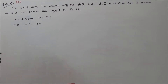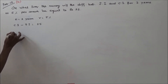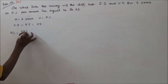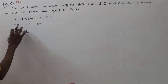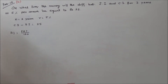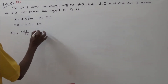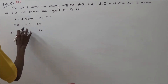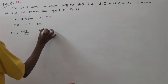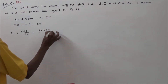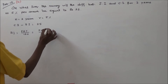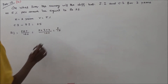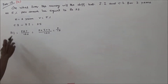First we calculate the simple interest. Simple interest is equal to PRT divided by 100, where P is the principal, R is the rate of interest, and T is the term. So this equals P into 5 into 2 divided by 100, which gives us P divided by 10. This is the simple interest.